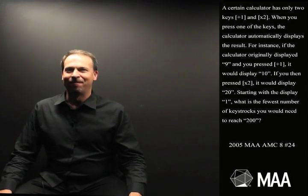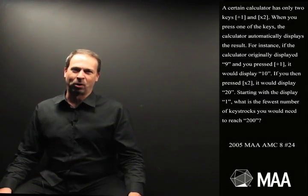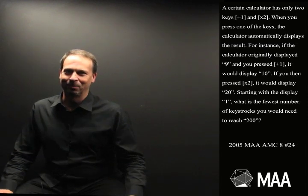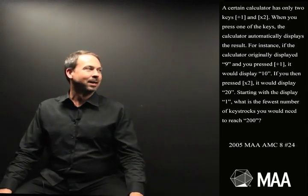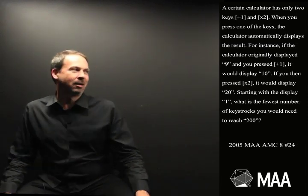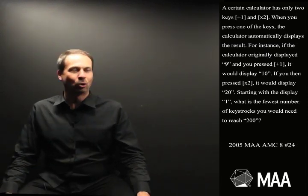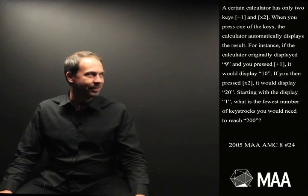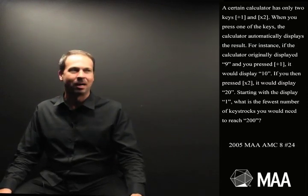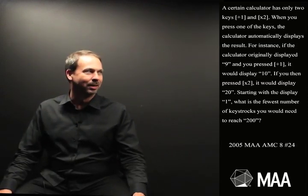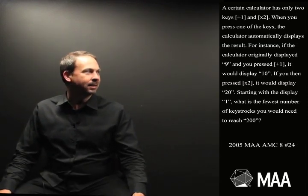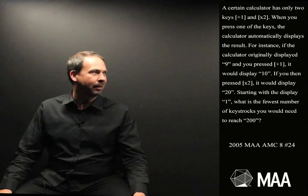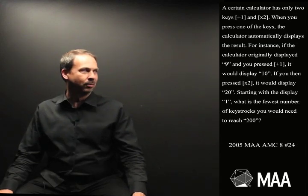G'day! Here's a very curious question for middle schoolers, which goes as follows. A certain calculator has only two keys: plus 1 and times 2. When you press one of the keys, the calculator automatically displays the result.